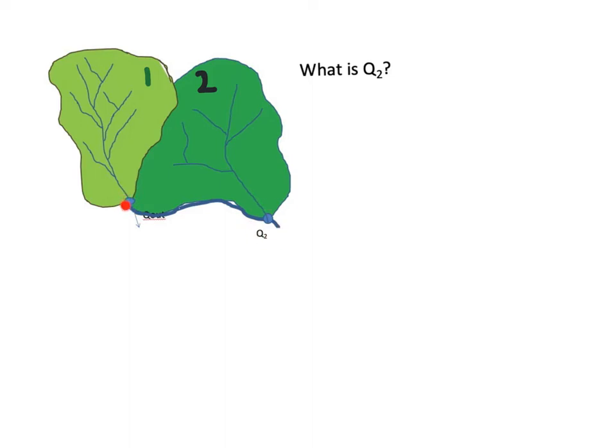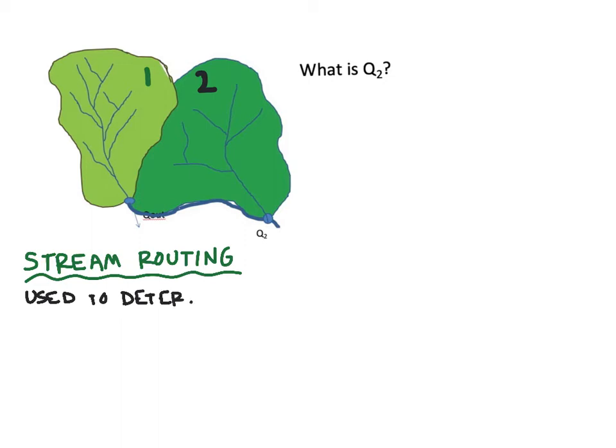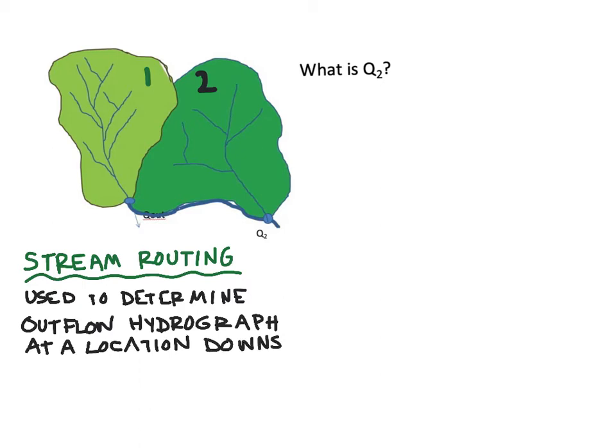What if we want to know what happens as the flow moves down this part of the river right before the second watershed distributes into the same waterway? In order to do this, we are going to use stream routing. Stream routing is used to determine the outflow hydrograph at a location downstream from an inflow hydrograph. In this case, what I have labeled as Q out would be your inflow hydrograph, and then Q2 would be your outflow hydrograph.